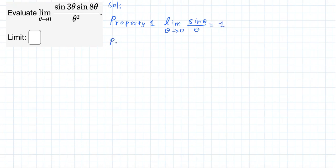Very well known property, right? Property two is going to be an extension of this property, which says that the limit as theta approaches zero of sine of k times theta, a multiple of theta, divided by k times theta is equal to one.